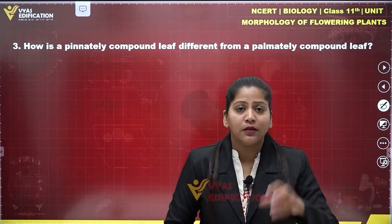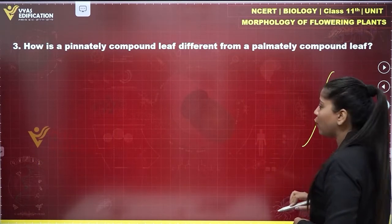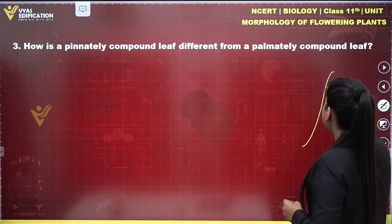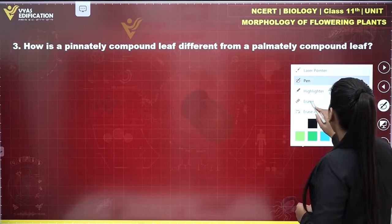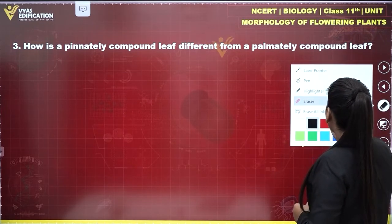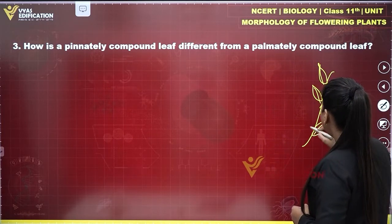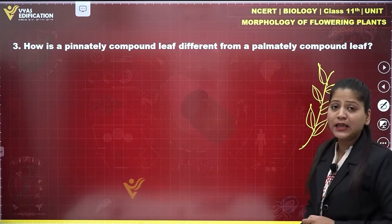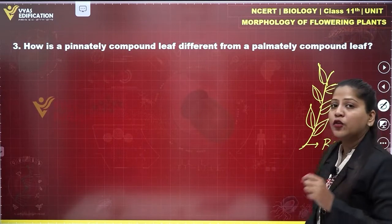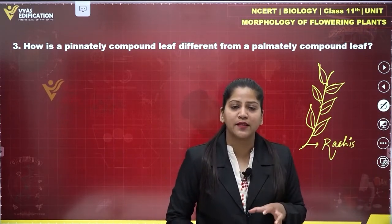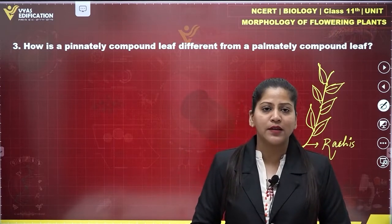In neem, you can see the arrangement of leaves where there is a leaf axis — a common axis — on which the leaves are attached. This common axis in pinnately compound leaves is known as rachis. So in pinnately compound leaves, the leaflets are attached to a common axis called the rachis, and the example is neem.